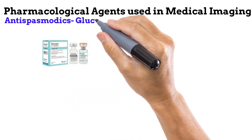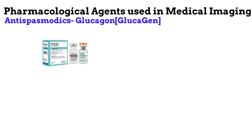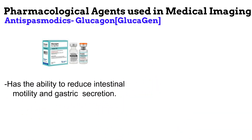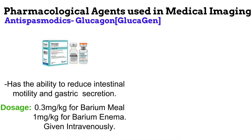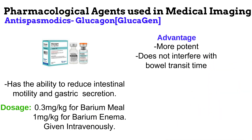Another antispasmodic is glucagon, commonly marketed as Glucagen. You probably know glucagon is a hormone that stimulates the production of sugar. Apart from this function, glucagon also helps to reduce intestinal motility and gastric secretion, producing effects similar to those of Buscopan. The dosage for Glucagen is 0.3 mg per kg of the patient for a barium meal, and 1 mg per kg for a barium enema. It is also administered intravenously. Glucagon is a more powerful antispasmodic than Buscopan, and it acts for a short period of time.